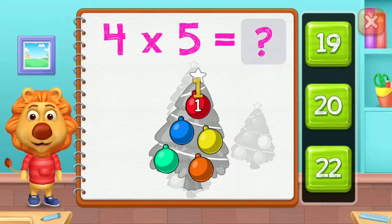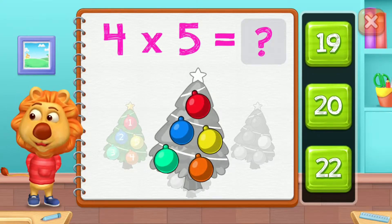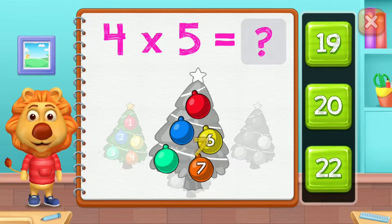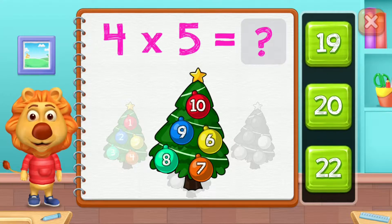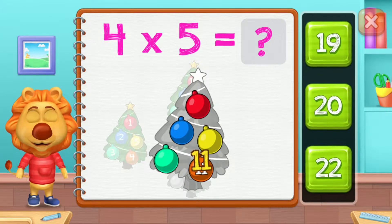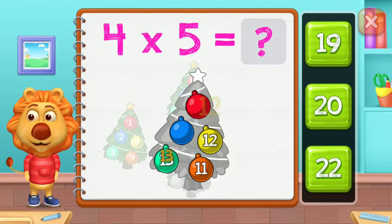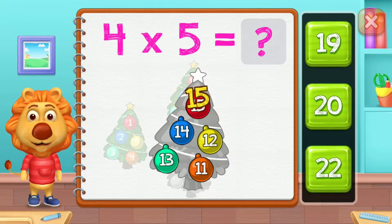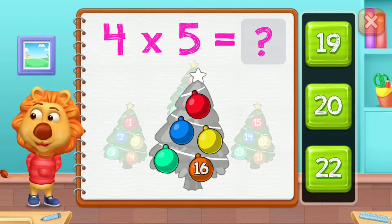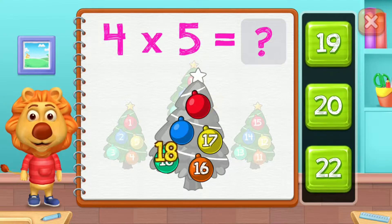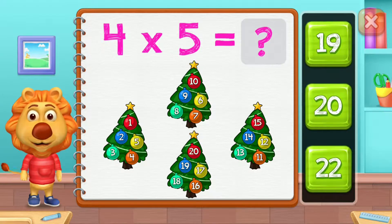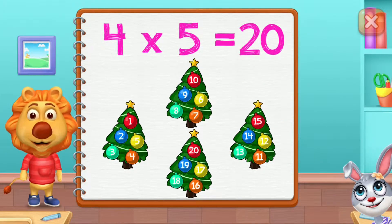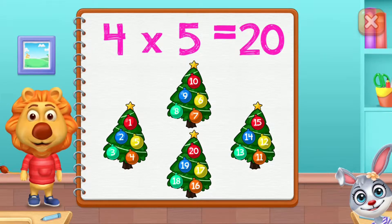1, 2, 3, 4, 5, 6, 7, 8, 9, 10, 11, 12, 13, 14, 15, 16, 17, 18, 19, 20. 4 groups of 5 equals 20.